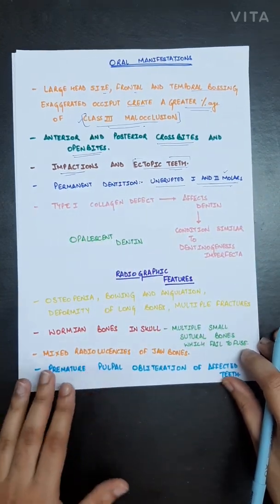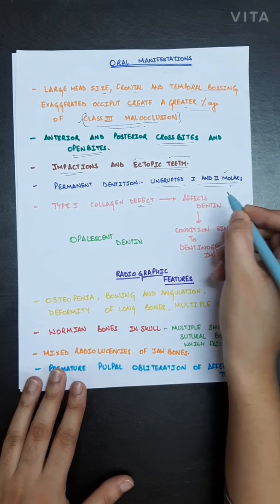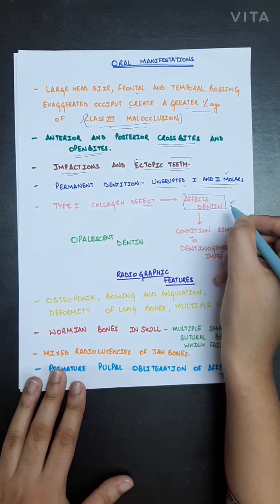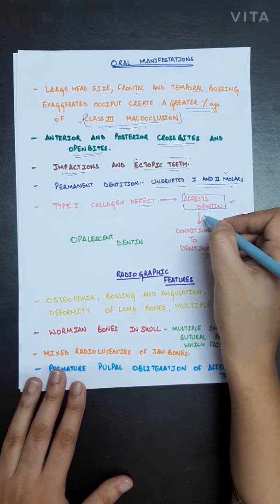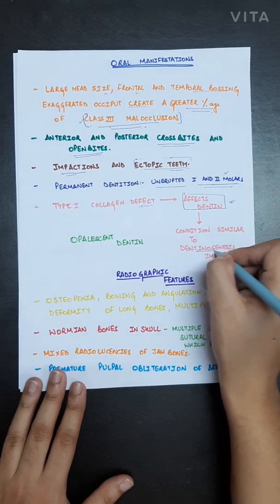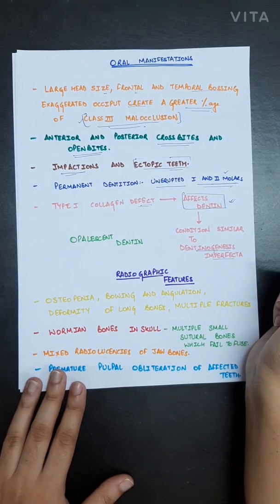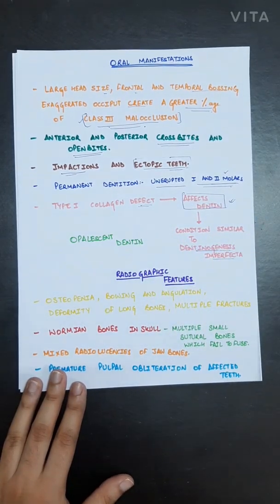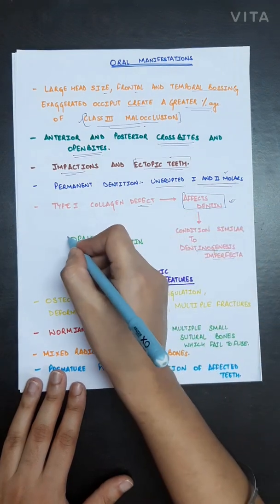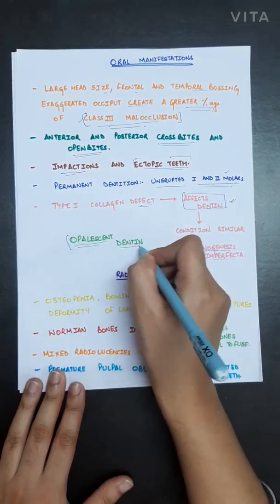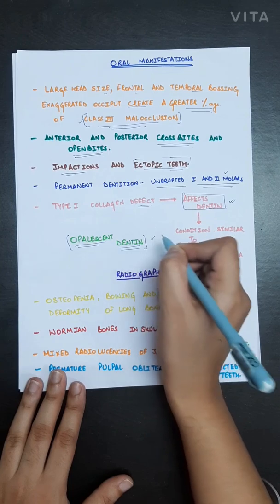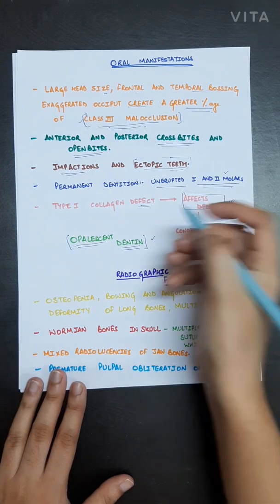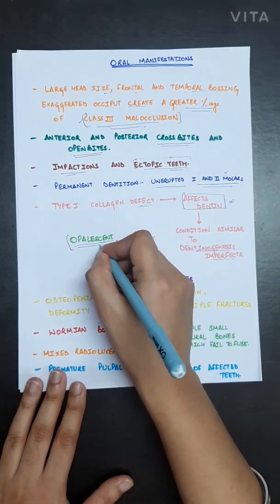Due to the type 1 collagen defect, defective dentine is formed. This condition is similar to dentinogenesis imperfecta, but since osteogenesis imperfecta is a genetic disorder, the term 'opalescent dentine' is more appropriate. The defective dentine present in osteogenesis imperfecta is therefore called opalescent dentine.